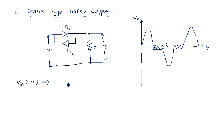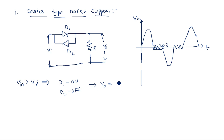If input voltage is greater than V-gamma, diode D1 is in on state, because the voltage difference between the anode and cathode equals V-gamma. So D1 is conducting and D2 is in off state. When D1 is on and D2 is off, there is effectively a short circuit between input and output, so output voltage equals input voltage. This occurs during the positive peak duration.